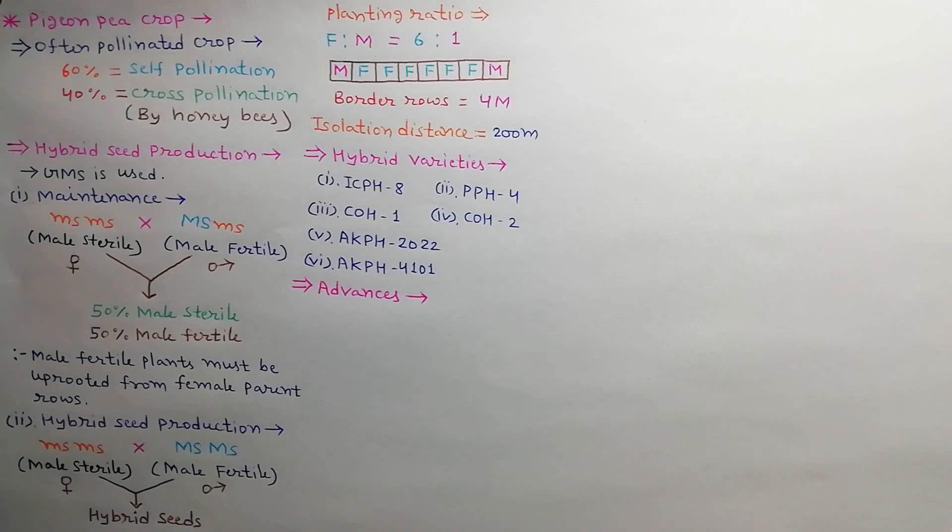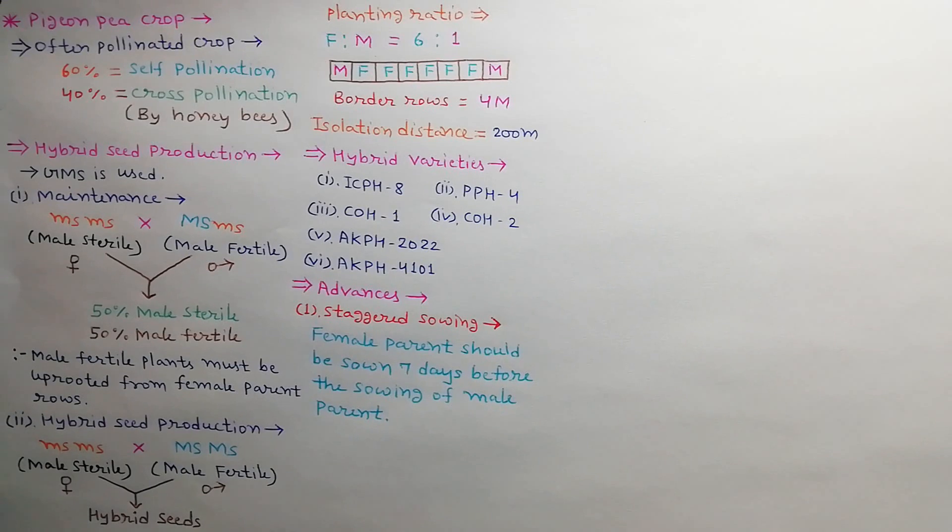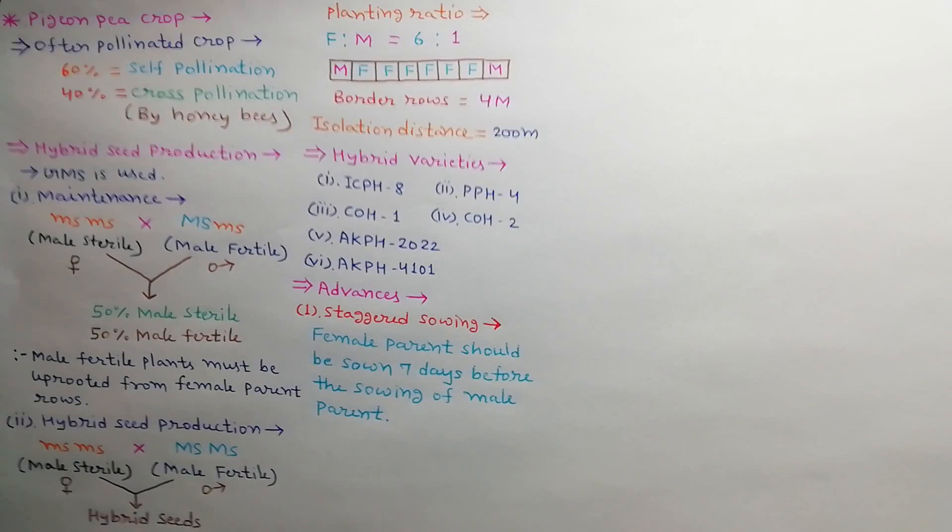Next, we will discuss the advances in hybrid seed production. First is staggered sowing. Female parent should be sown 7 days before the sowing of male parent so that flowering can be synchronized.